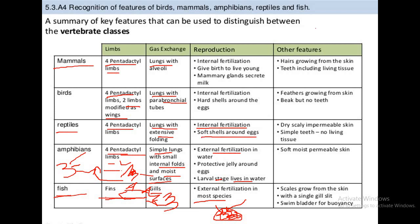In reptiles, fertilization is internal, but they reproduce by laying eggs. Organisms that reproduce by laying eggs are known as oviparous. Organisms that give birth to their young ones are known as viviparous. Out of the five classes of vertebrates, four are oviparous: birds, reptiles, amphibians, and fishes. Mammals have a viviparous mode of reproduction because they give birth to their young ones.